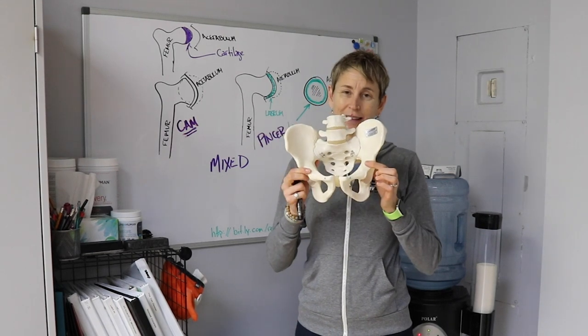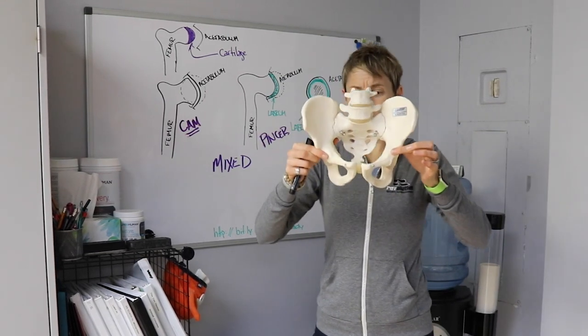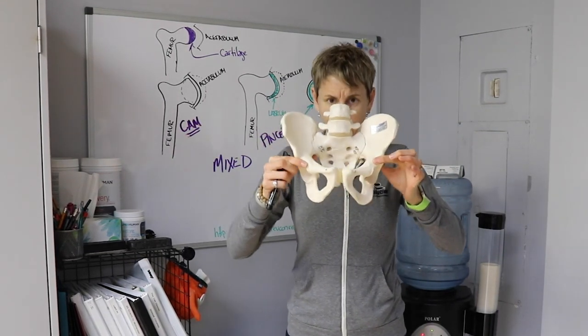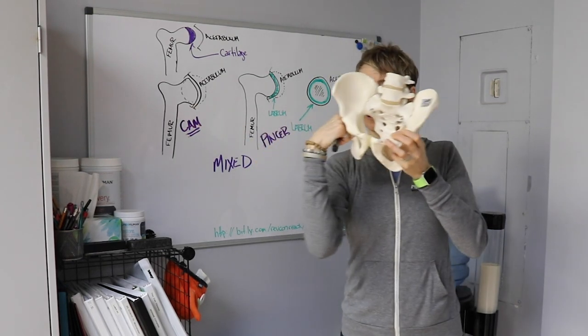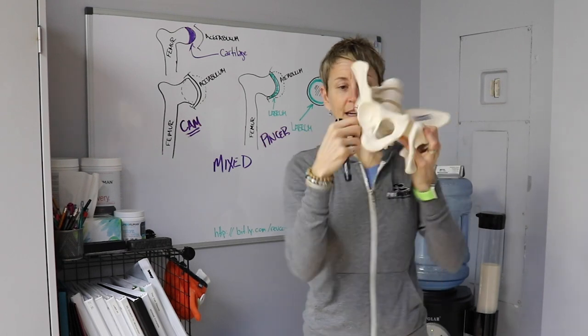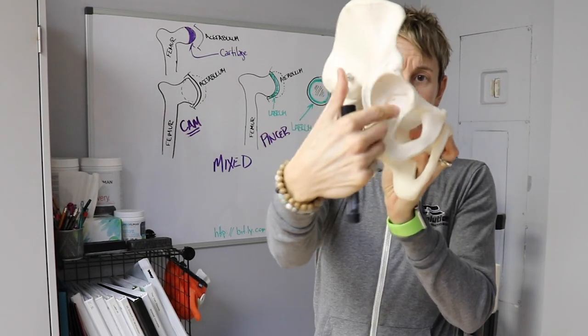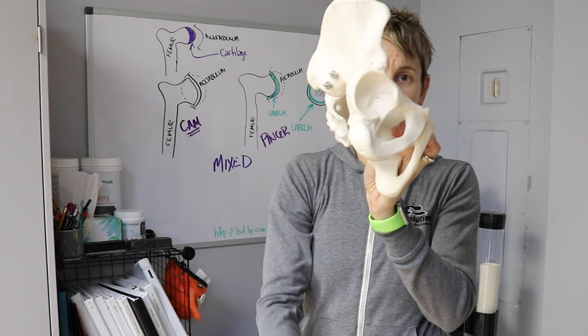Now I have another visual aid. This will make it easier. So this is your pelvis. So I'm standing facing you. This is my pelvis. So my femur and the ball fit in here. So that is the socket. That is the acetabulum.